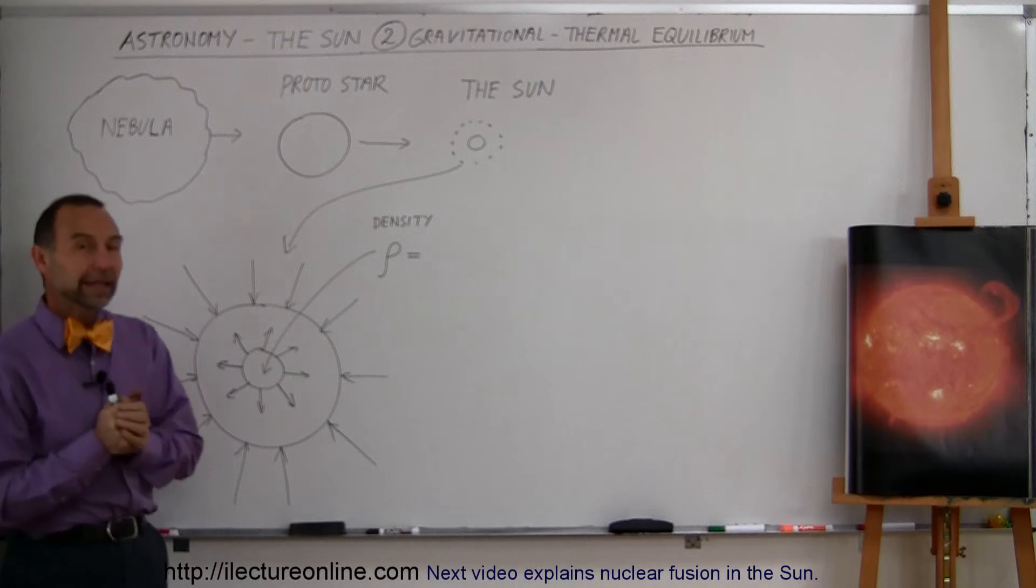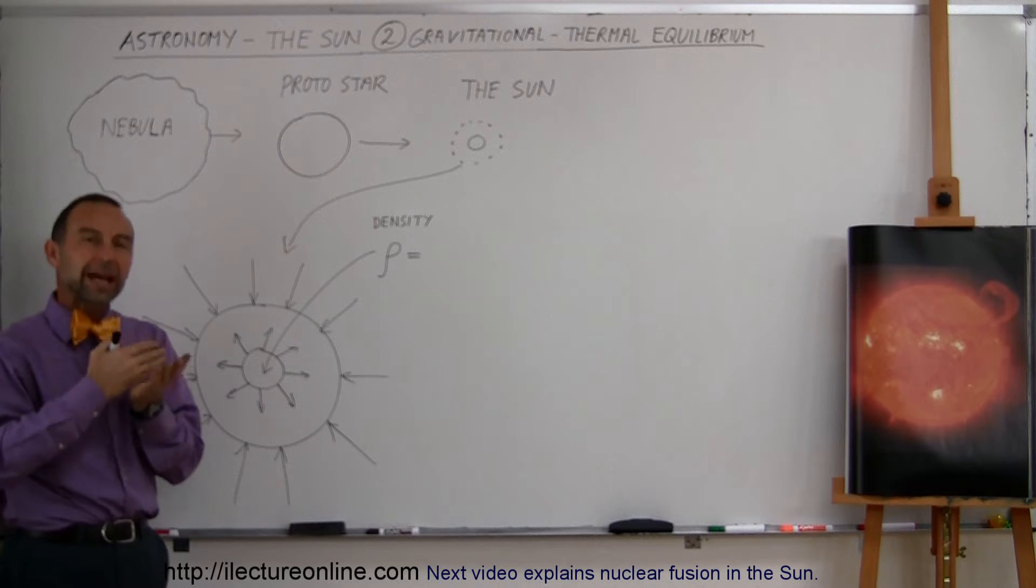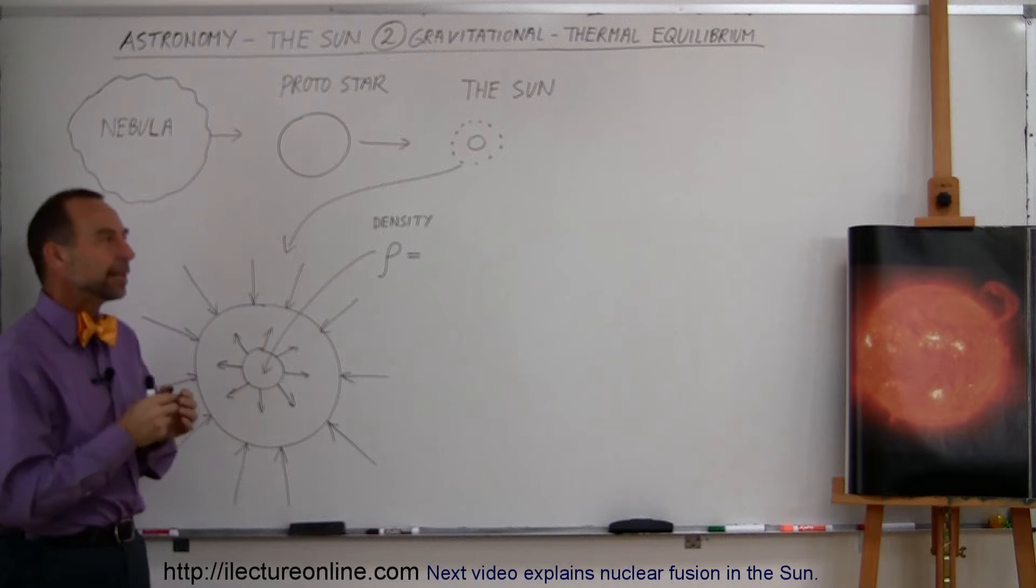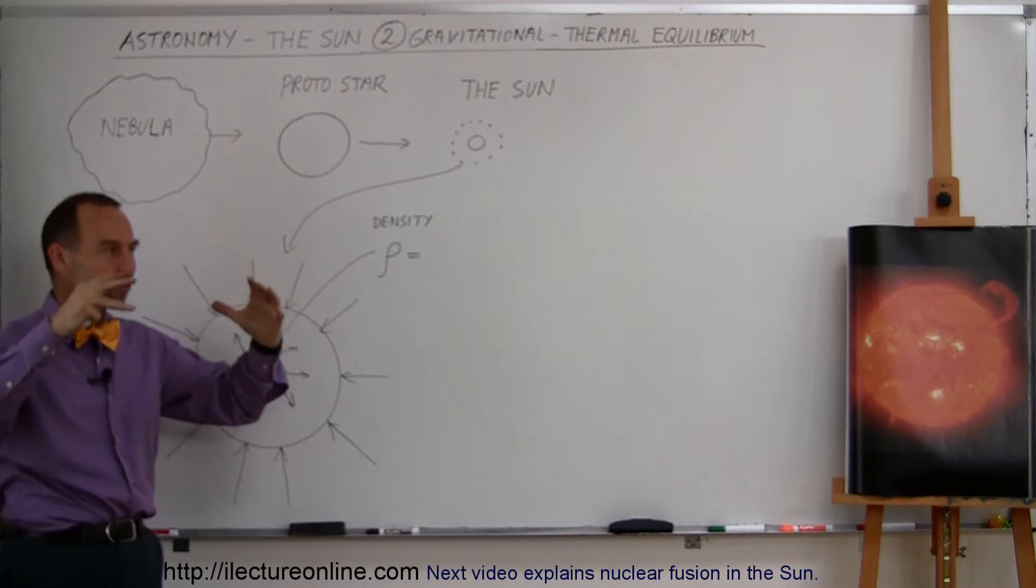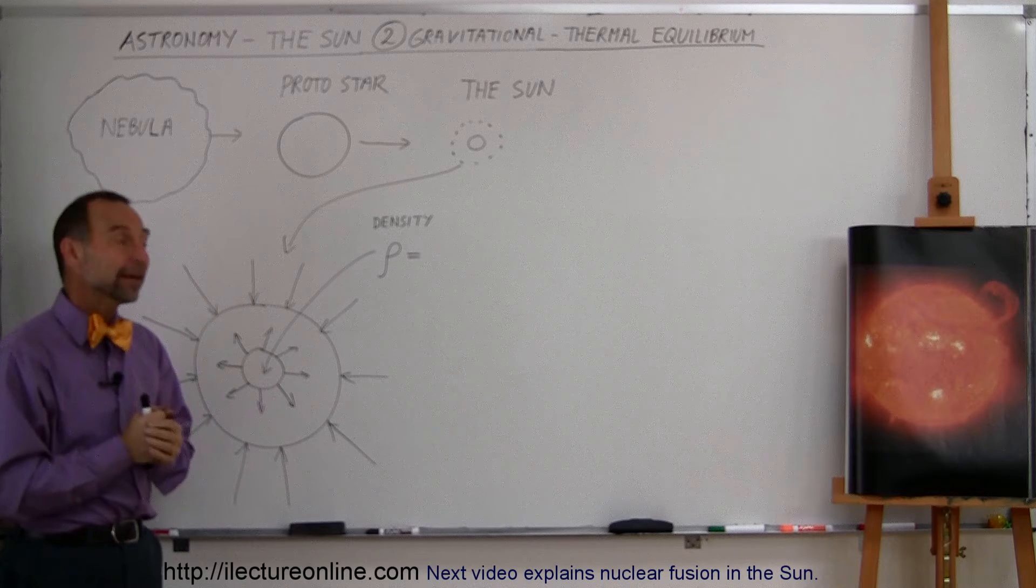Here we're going to talk a little bit more about the Sun. In order to understand the Sun, there are certain aspects we need to understand. And the basic thing about the Sun is what makes the Sun into a sphere, into a star, the size that it is.